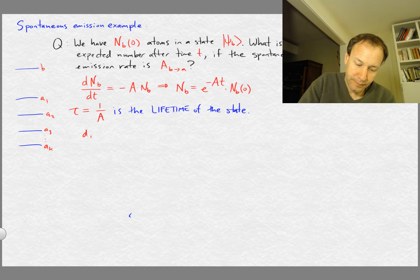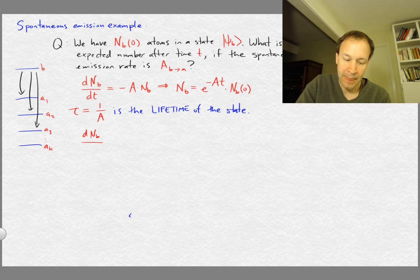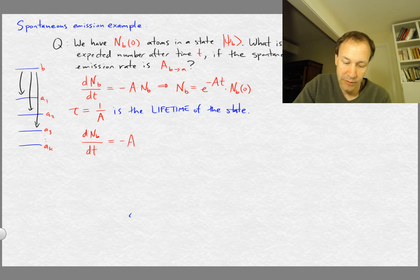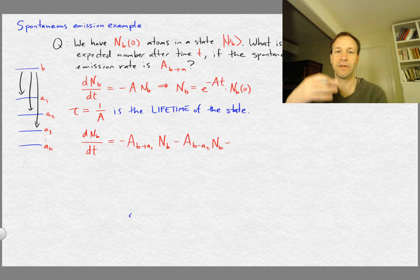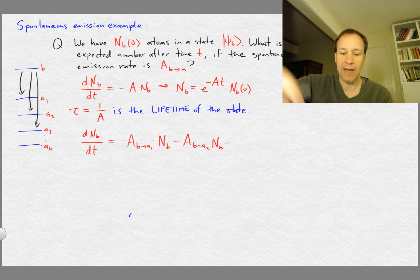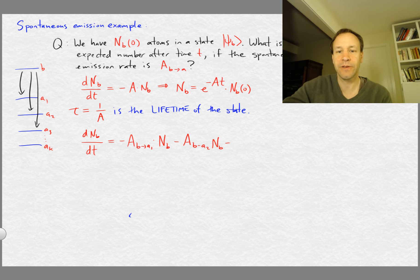And so then we can see that there are now a bunch of possible transitions from the b state down to all of those lower states. And so when we want to understand what is the rate of change of the number of atoms in the b state, well, we have to take into account the spontaneous emission rate for state b going to a1, and then the spontaneous emission rate for b going to a2. And so each of those processes is a separate way which we can lose the b atoms. And calculating the rate for each of those is just the same as before, and so we just have then a sum of terms on the right hand side.